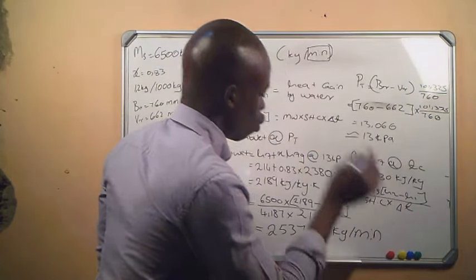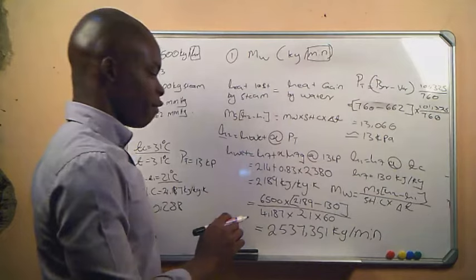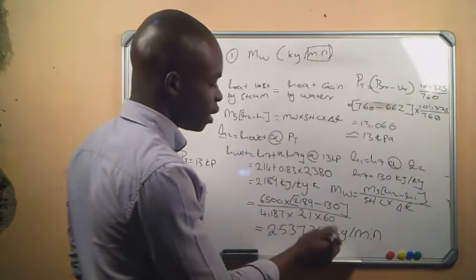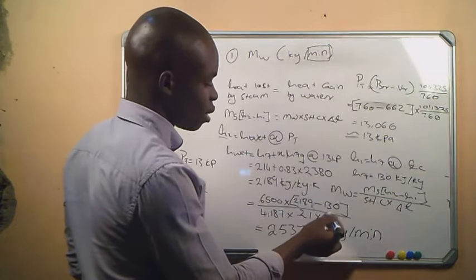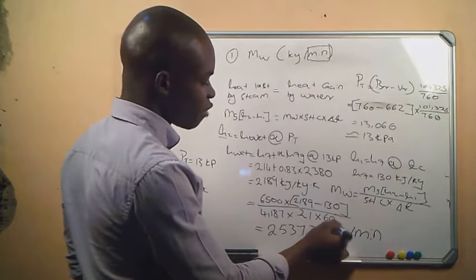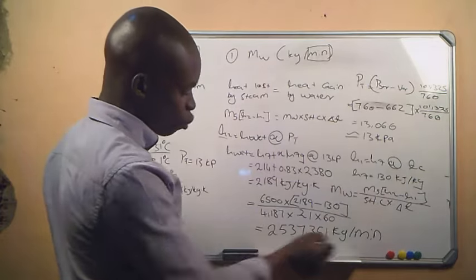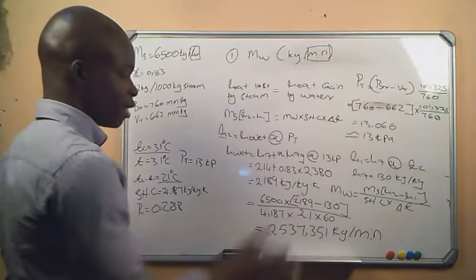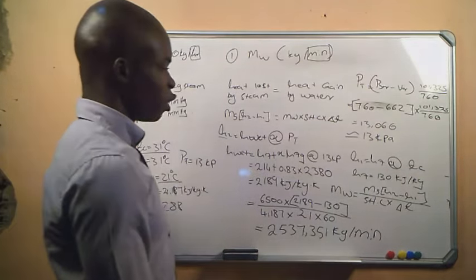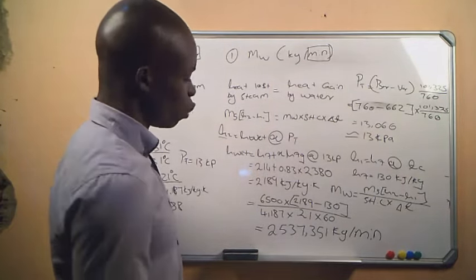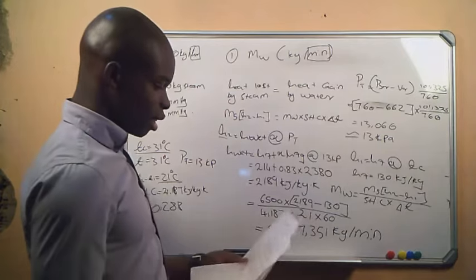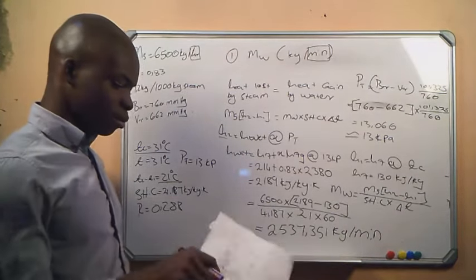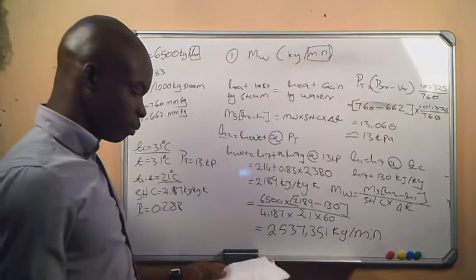If you calculated the answer without dividing by 60, you must divide that result by 60 to convert to per minute. That completes question one. Now we move to question number two.